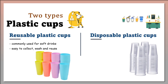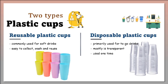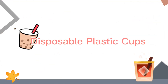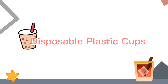Disposable plastic cups are primarily used for to-go drinks from a cafe or brewery shop. This type of plastic cup is usually transparent to show the drink inside. However, it can be used one time only. This video will be focusing on the disposable plastic cups.